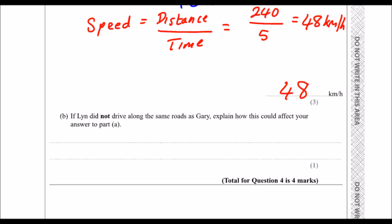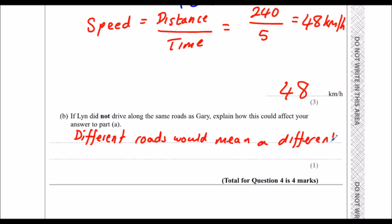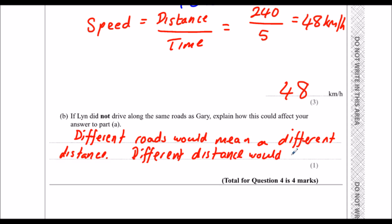Part B: if Lynn did not drive along the same roads as Gary, how could this affect your answer? If she didn't drive along the same roads, she would have gone a different distance, and a different distance would change the speed. So different roads would mean a different distance, and a different distance would mean a different speed. You could also say: if the distance was more, the speed would go up, and if the distance was less, the speed would go down.